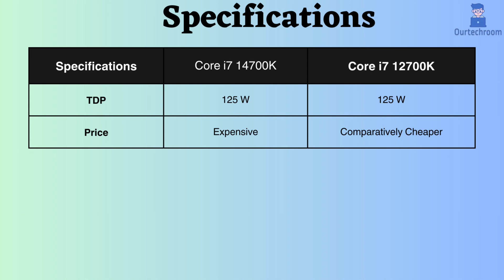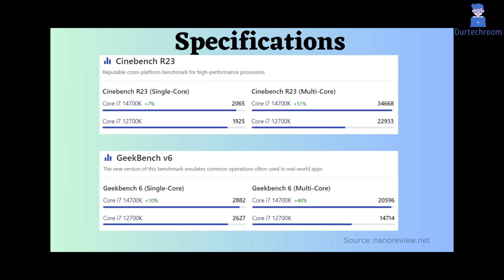In terms of pricing, the Core i7-14700K is higher than the Core i7-12700K. Turning our attention to benchmark comparisons, when assessing Cinebench R23 and Geekbench V6 for both single-core and multi-core performance, the Intel i7-14700K outperforms the Core i7-12700K.